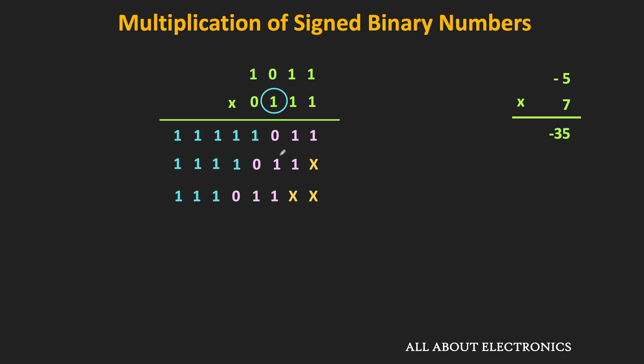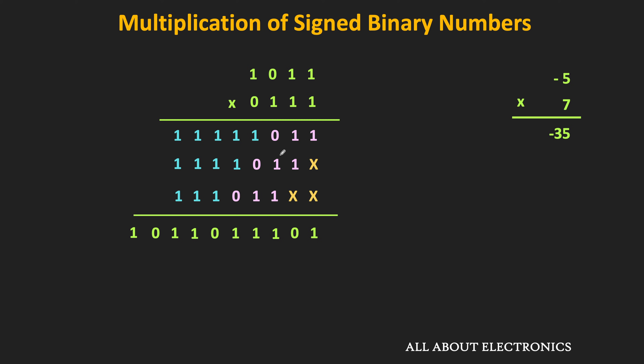Finally, looking at the MSB of the multiplier, it is equal to 0. Therefore, the partial product is equal to 0, and it is not included in the addition. So now we need to add all these partial products together.